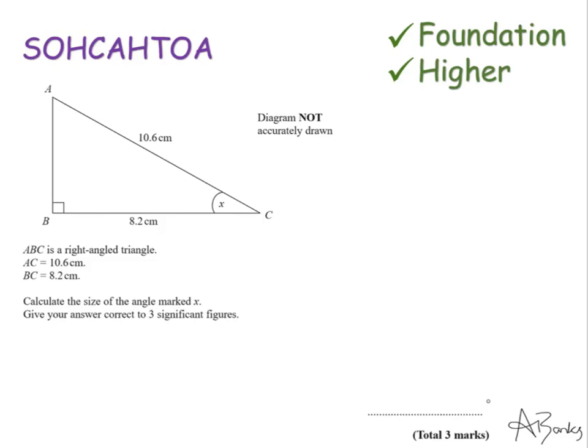Hypotenuse is the longest side. That's going to be this 10.6 here, opposite the right angle. My opposite is opposite this X here. So opposite the X is over here. And the adjacent is in between the right angle and the angle. So it's this side at the bottom. That's my adjacent.